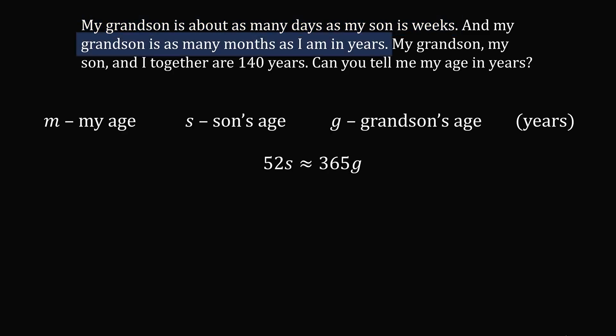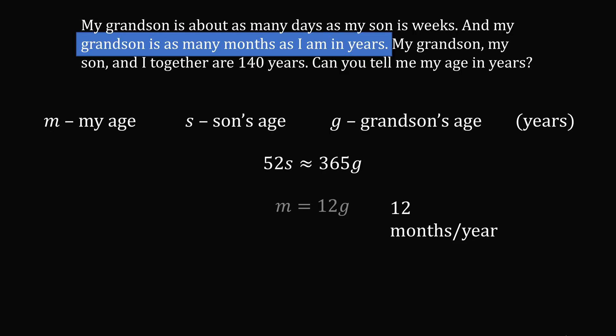My grandson is as many months as I am in years. There are 12 months in a year. So if we multiply g by 12, we get the grandson's age in months, and that's equal to my age in years. So m is equal to 12g.